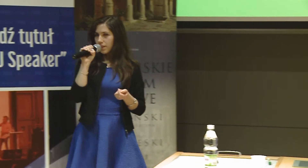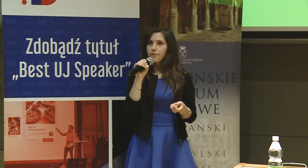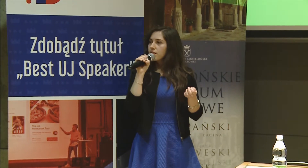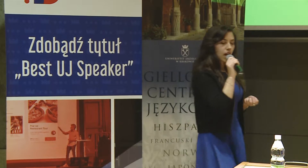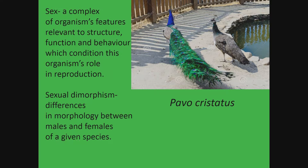In most animal species, especially species of birds, we have significant sexual dimorphism. An example of these birds is a peacock, shown in this picture. Here we have a male — beautiful and colorful, as you can see. And here we have a female — gray and boring.